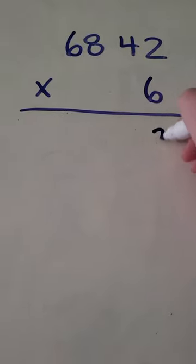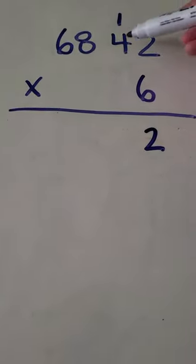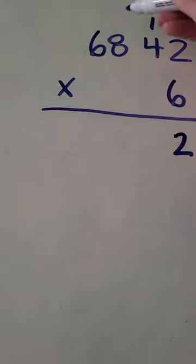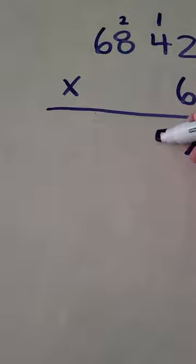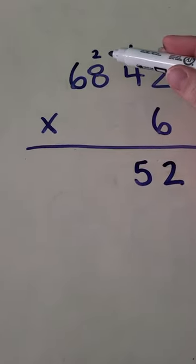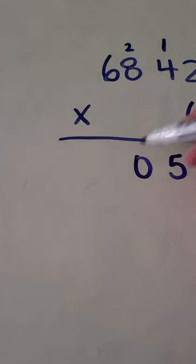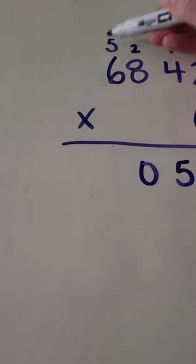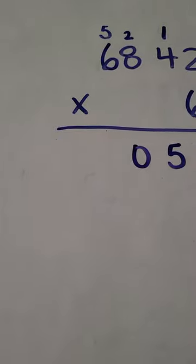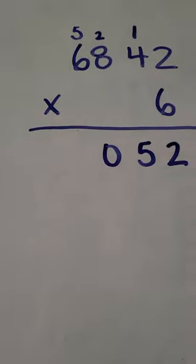Nice and simple, six times two is twelve. Four times six is twenty-four plus one at the top is twenty-five. Six times eight is forty-eight plus two is fifty. Then six times six is thirty-six plus five is forty-one.